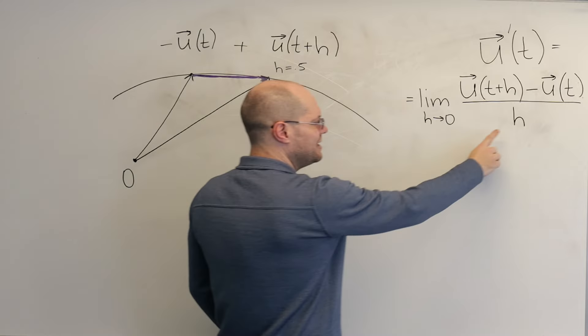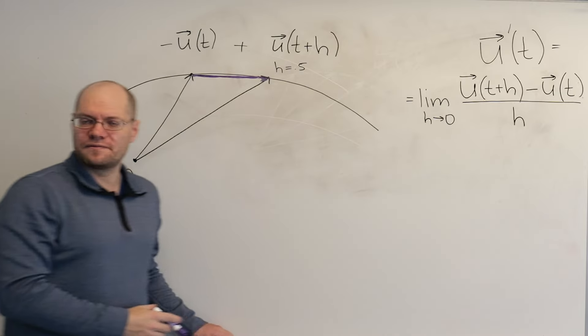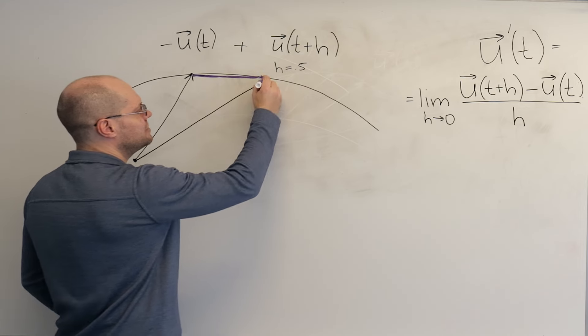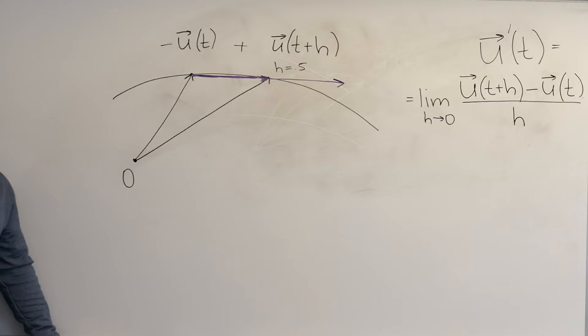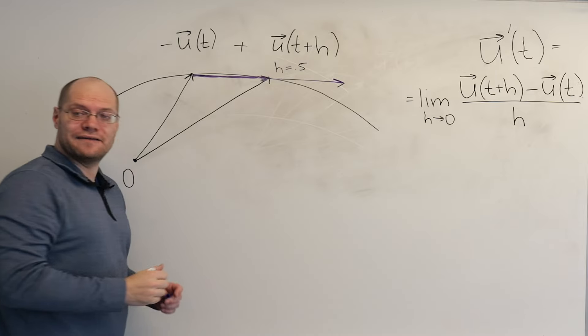So then the next step is dividing by 0.5, which is the same as multiplying by 2. So you end up with a vector like this. And the analysis of h equals 0.5 is finished.